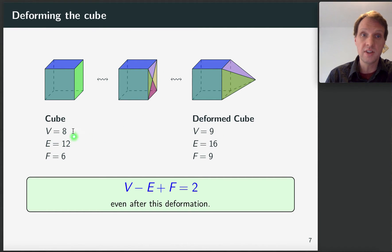What about the edges? Here we have 12 edges and we added these four edges here, and so we now add 16. What about the faces? We removed this bright green face here and replaced it by these four triangles that you can see in this picture here. So we removed one and added four, which brings us from six up to nine.